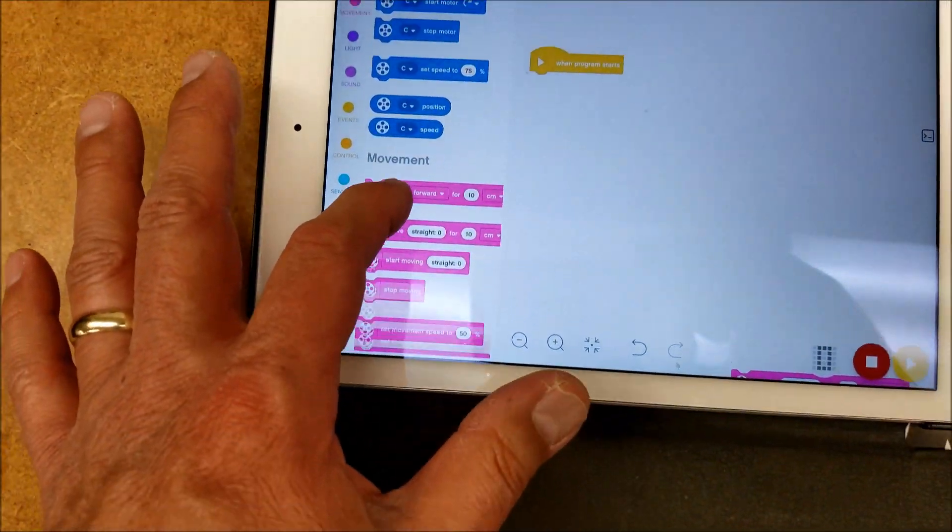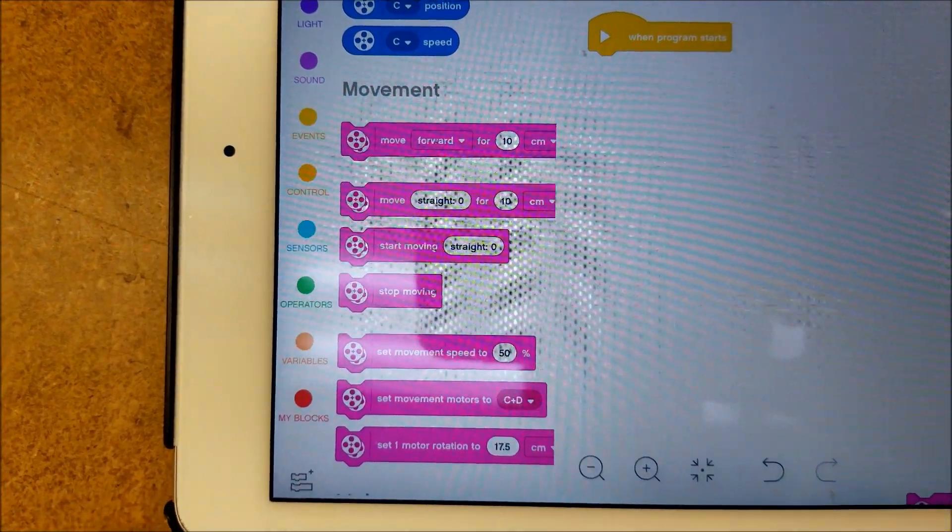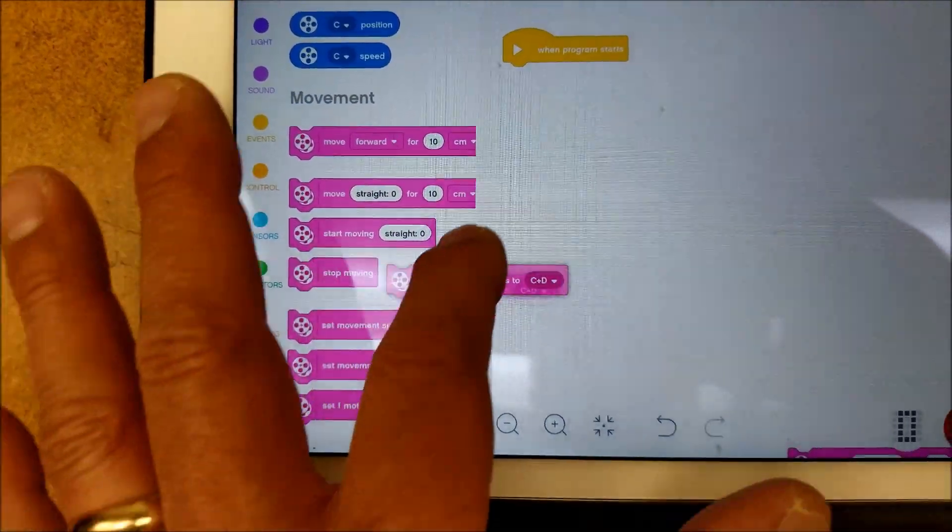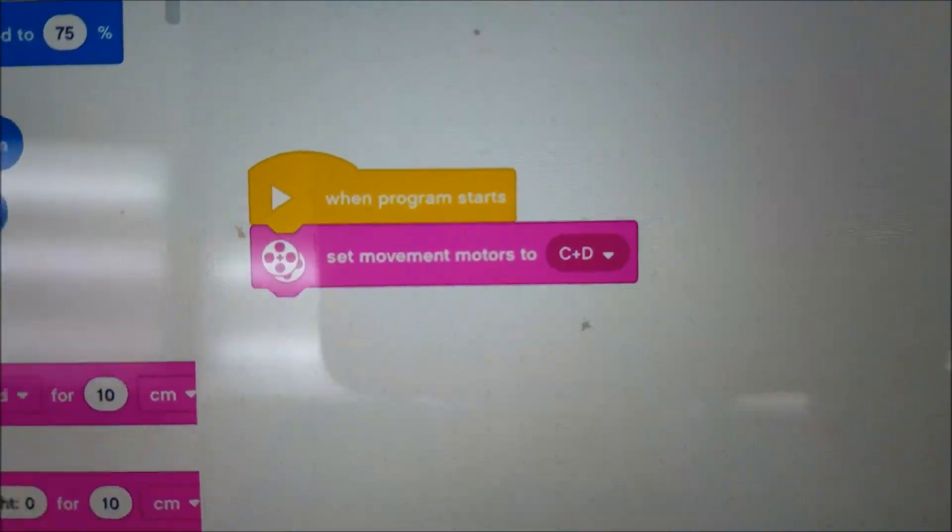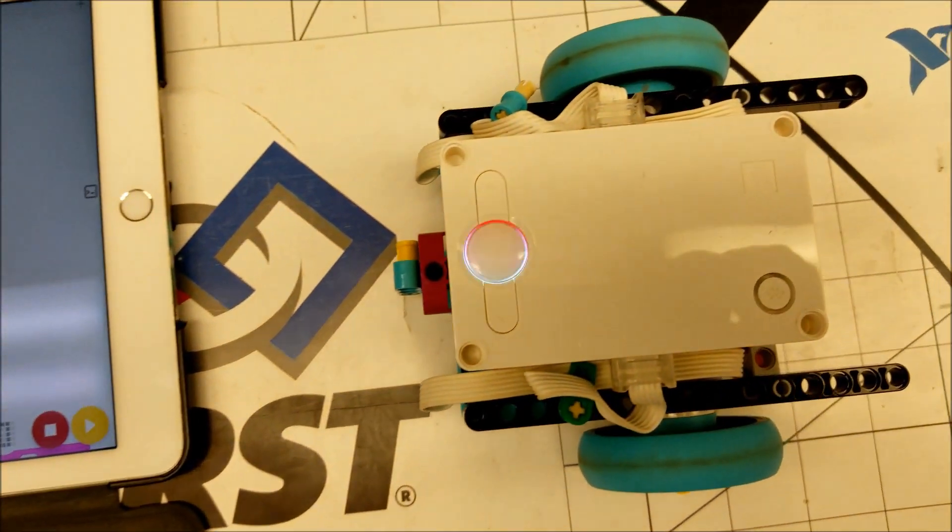We're going to go to the pink section, which is our movement, and I'm just going to put up there set movement motors to C and D. The nice thing about it is they're already in C and D.